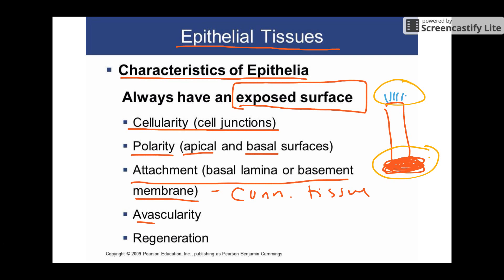The next term is avascularity. Avascularity means they're lacking blood vessels — typically you don't have very many blood vessels in epithelial tissues at all. And then the last one is regeneration, which is pretty important. Regeneration just means they have a really high rate of mitosis, and for a couple of reasons: they don't have a lot of blood vessels, so the cells don't live very long, and the other part is they're exposed.